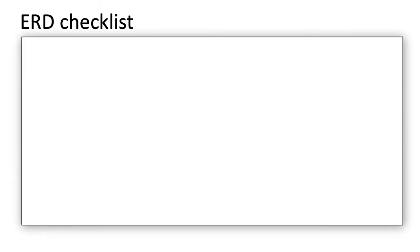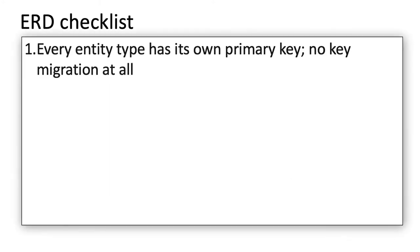Now before we finish the logical model, let me just quickly go through certain items for the checklist, as a checklist to make sure that your ERD is now ready for moving forward, ready to move forward. So as I've already said, every entity type has its own primary key and we don't rely on key migration.